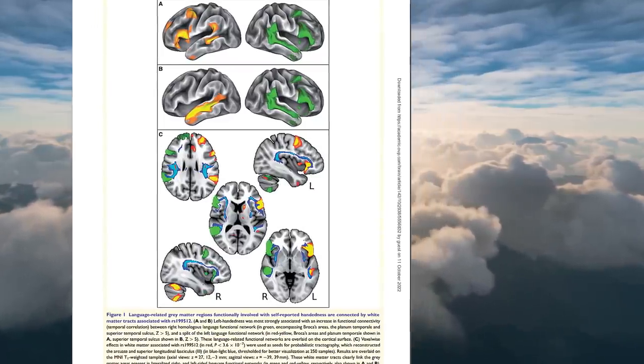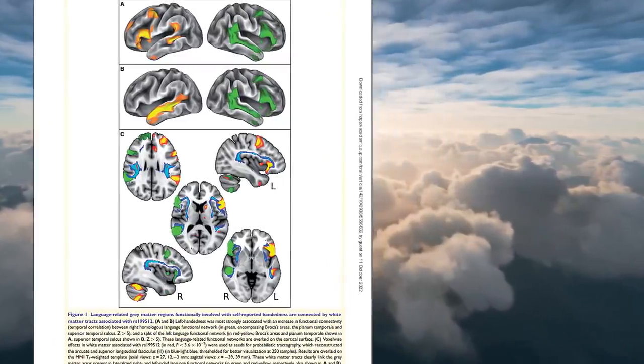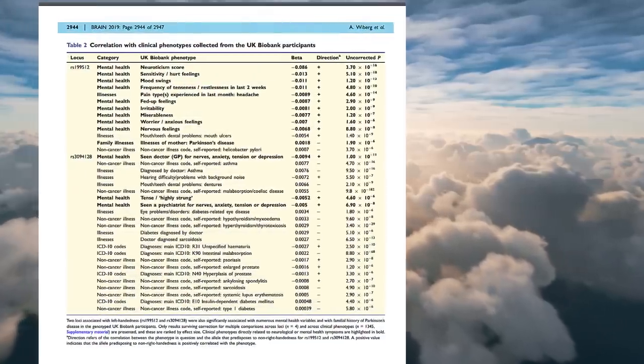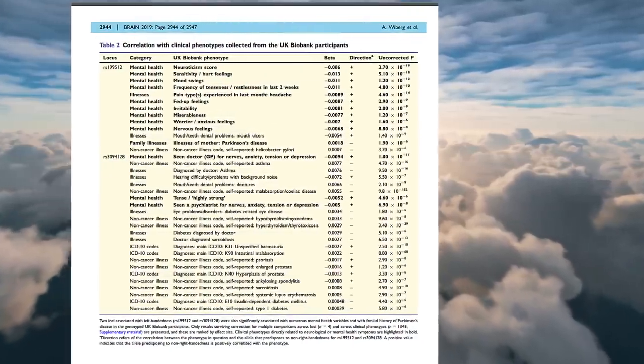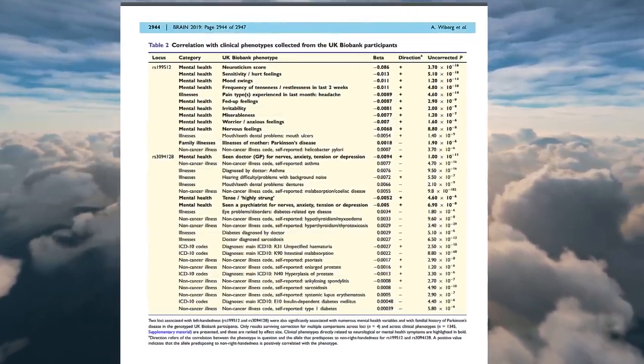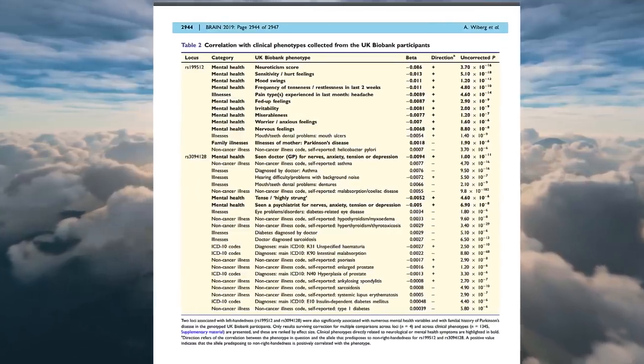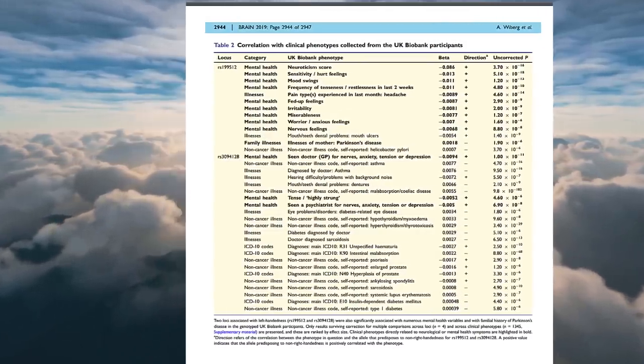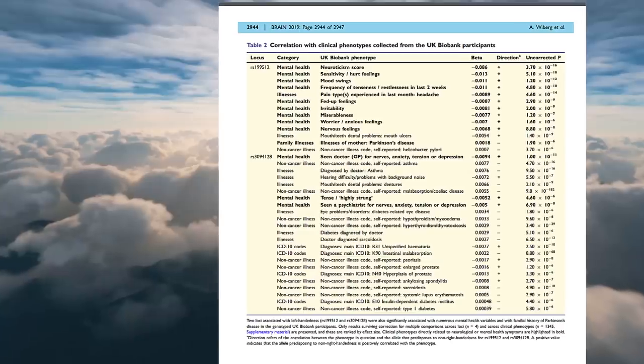Whatever the reason, the Neanderthal skeletal record shows that a stark majority, 76% of 69 Neanderthals studied, were dominant in their right hands. That's very close to the modern human figure of 85%. How might a prevailing trend of right-handedness have affected Neanderthal day-to-day life?